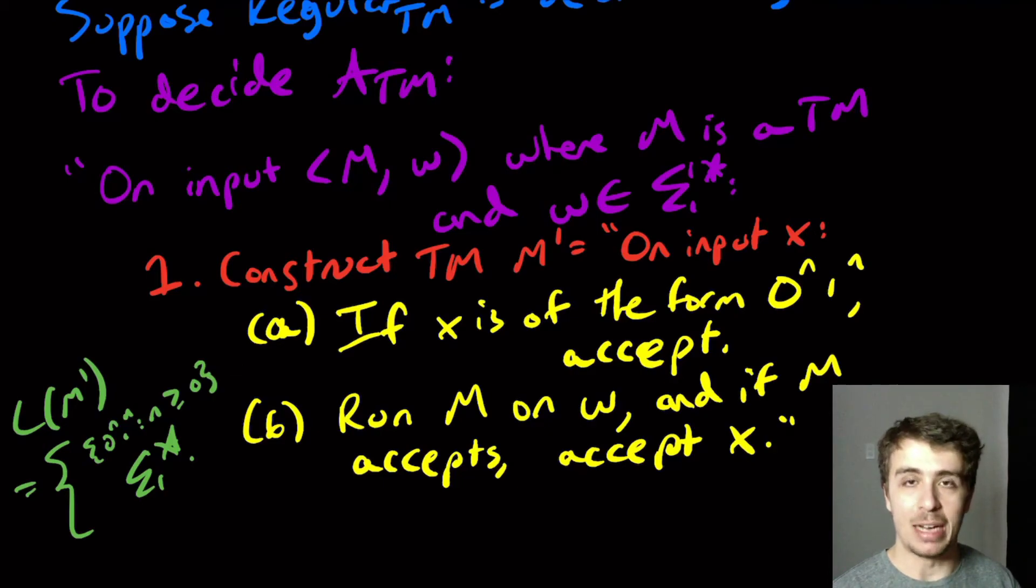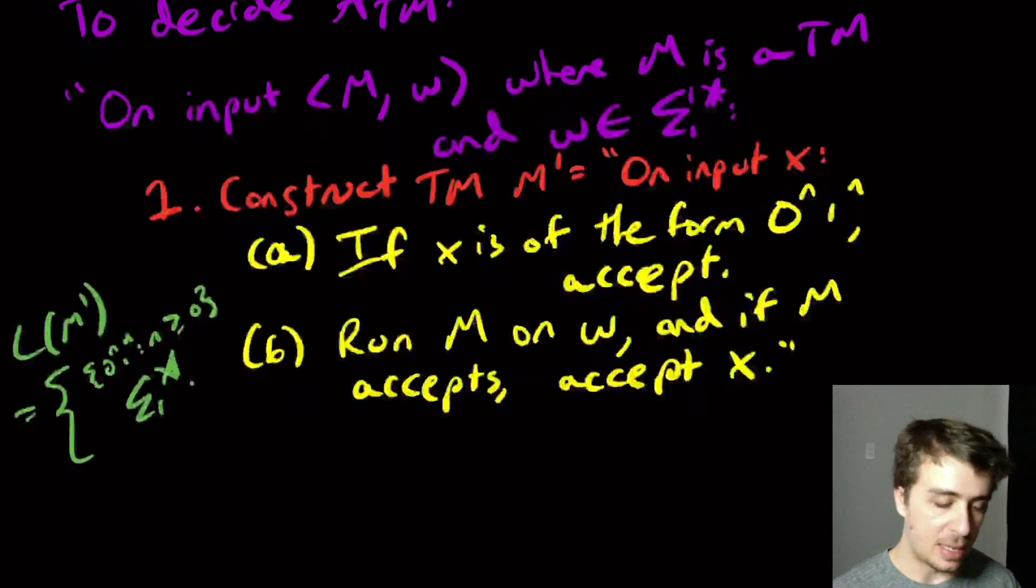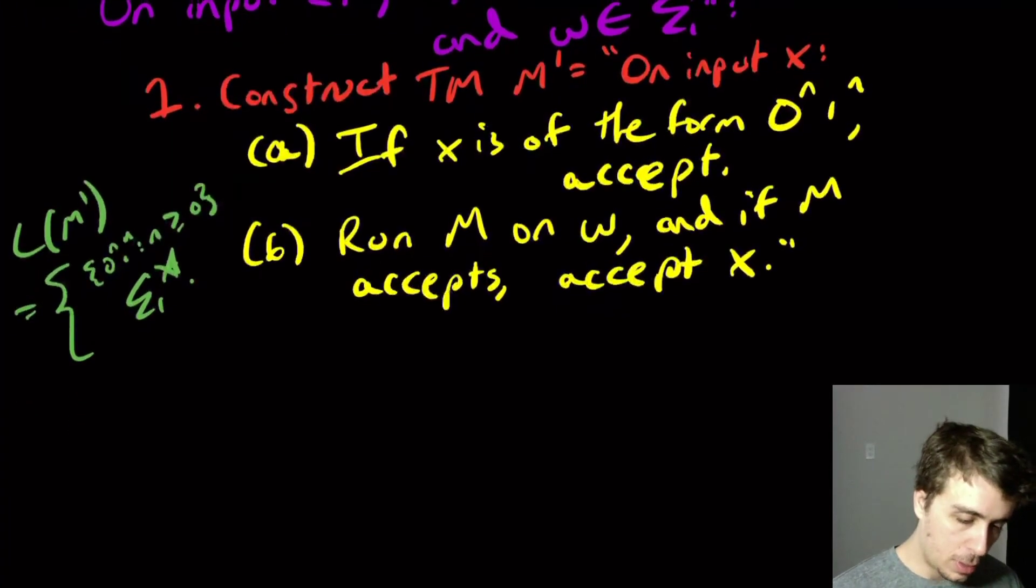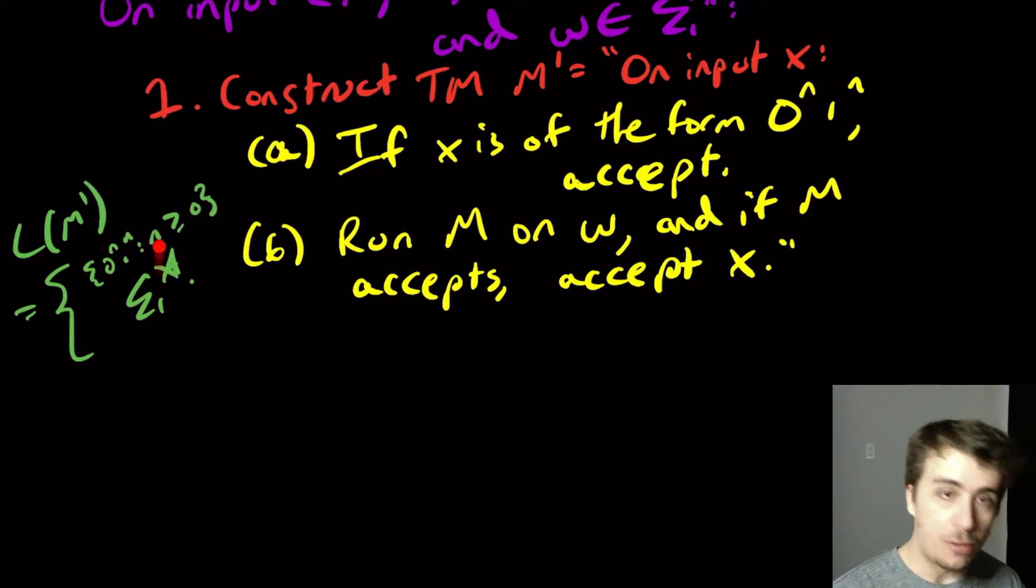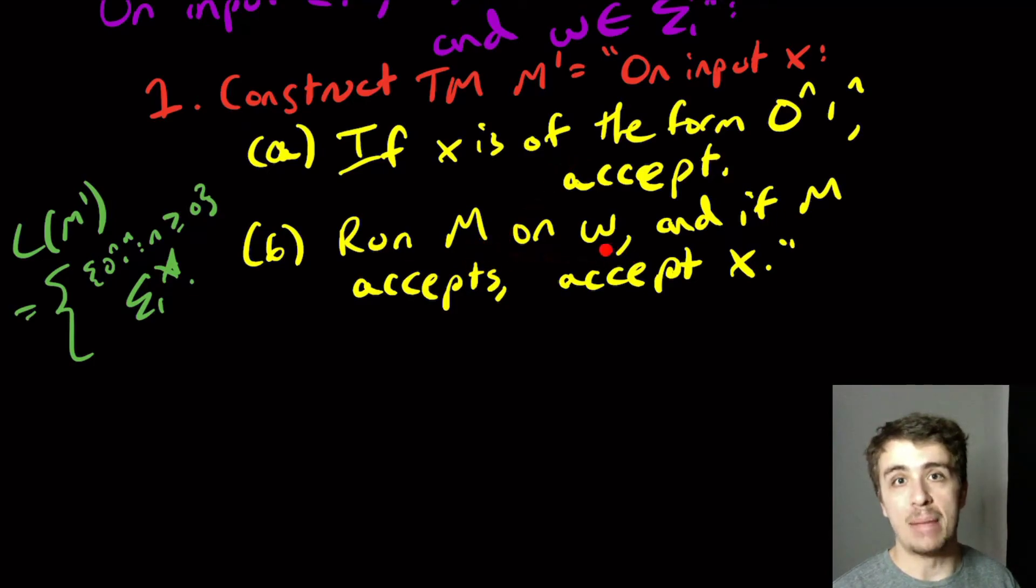That's how we actually prove that this thing is not decidable. Notice that the difference between these two cases rides on whether M accepts W. If M does not accept W, no string is going to be accepted except the ones up here.